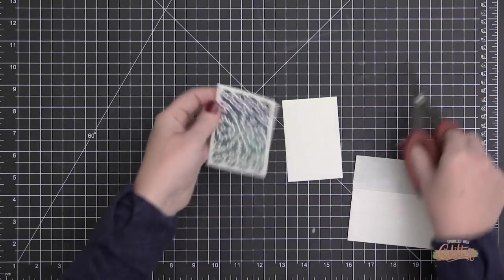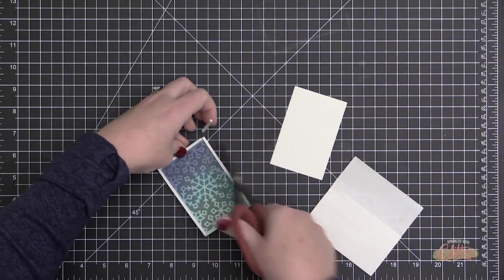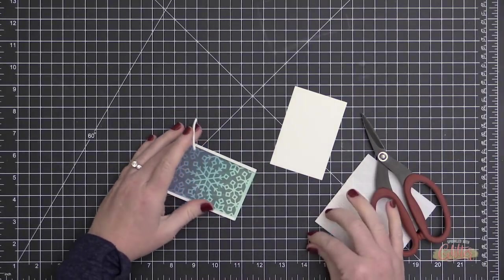These are the Darice thin foam adhesive strips, and I'm adding them to both of the long sides of this window die cut and then along the bottom as well. I'm just kind of sealing that up, and that's going to hold my gift card inside the pocket that I'm creating.